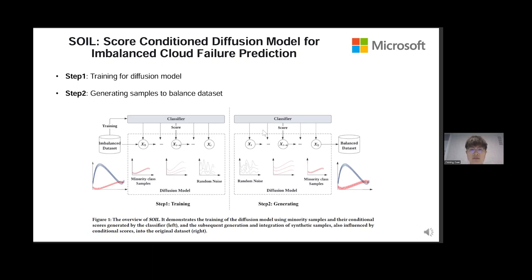During the generation step, we guide the diffusion model to produce high-quality samples by specifying particular probability scores. These scores are associated with samples positioned at the classification boundaries.